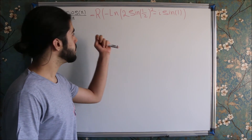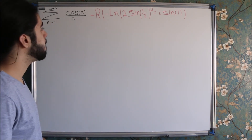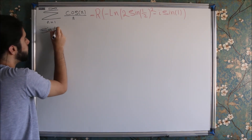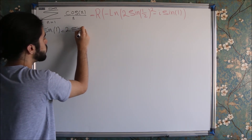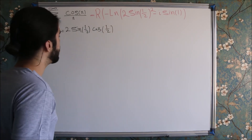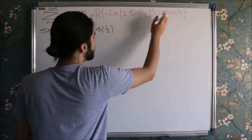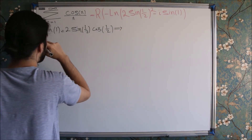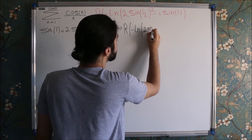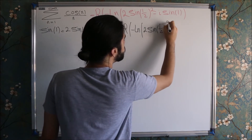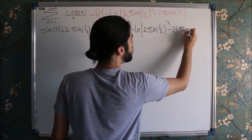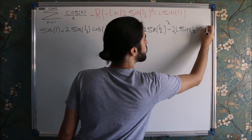We also use another trigonometric identity which states that sine of 1 is equal to 2 times the sine of 1 over 2 times the cosine of 1 over 2. I can plug this into our expression, and we will get the real part of minus ln of 2 times sine squared of 1 over 2, minus 2 times i times sine of 1 over 2 times cosine of 1 over 2.